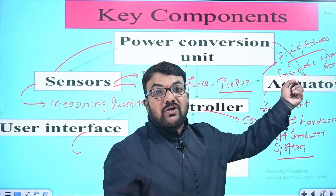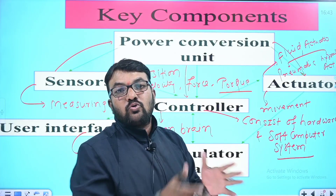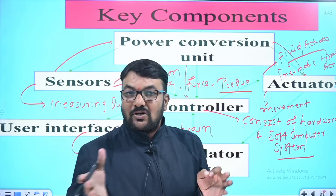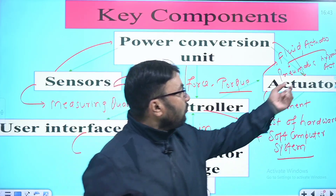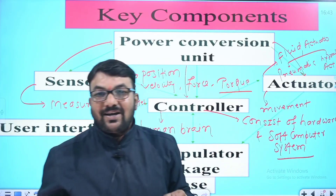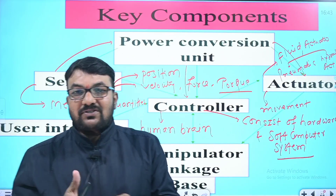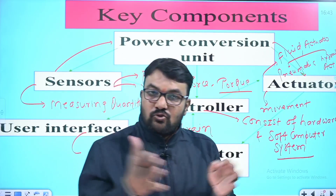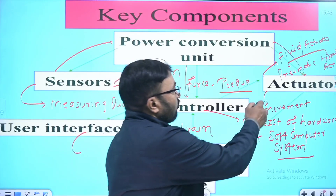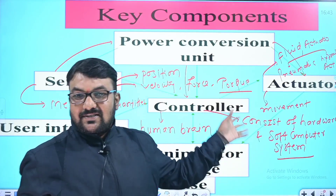Pneumatic means the operation is driven through air pressure. For hydraulic actuators, we use oil as the working medium. Electric actuators include various motor types. We will see all the basic ideas about these actuator types in detail.